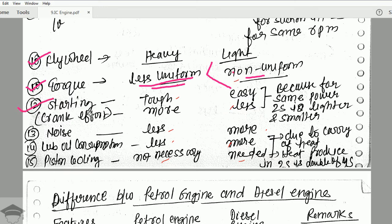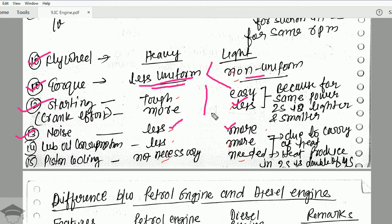Regarding starting crank effort, it is more for a four stroke engine and less for a two stroke engine because the two stroke engine is lighter and consumes less starting power. For noise, it is less in a four stroke engine and more in a two stroke engine. The four stroke engine's larger size helps dissipate noise, while in a two stroke engine the ports and mechanical vibration create more noise.